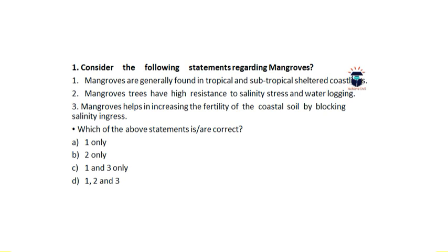The first question is: consider the following statements regarding mangroves. First, mangroves are generally found in tropical and subtropical sheltered coastlines. Second, mangrove trees have high resistance to salinity stress and water logging. Third, mangroves help in increasing the fertility of coastal soil by blocking salinity ingress. We have to choose the correct answer.